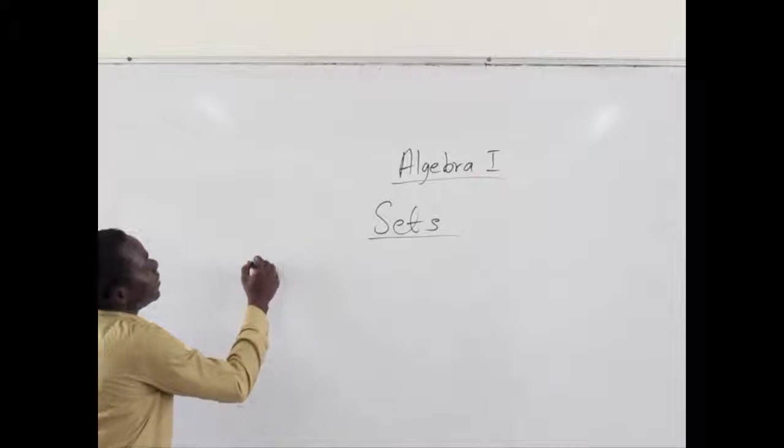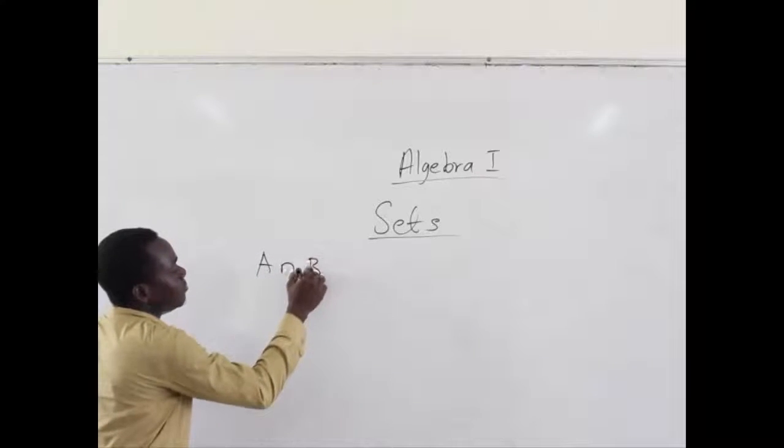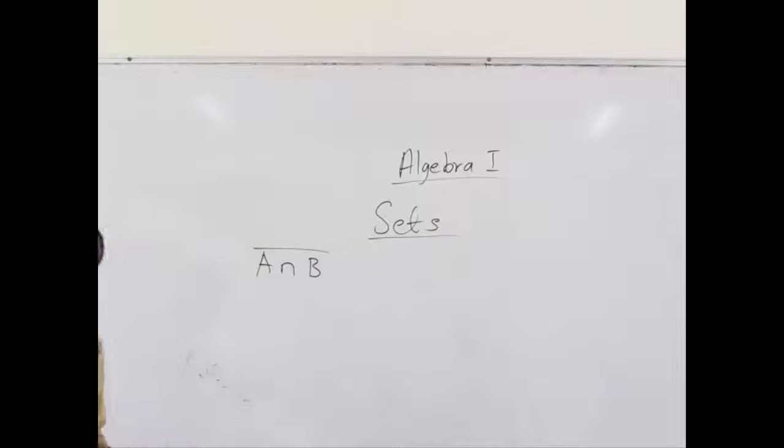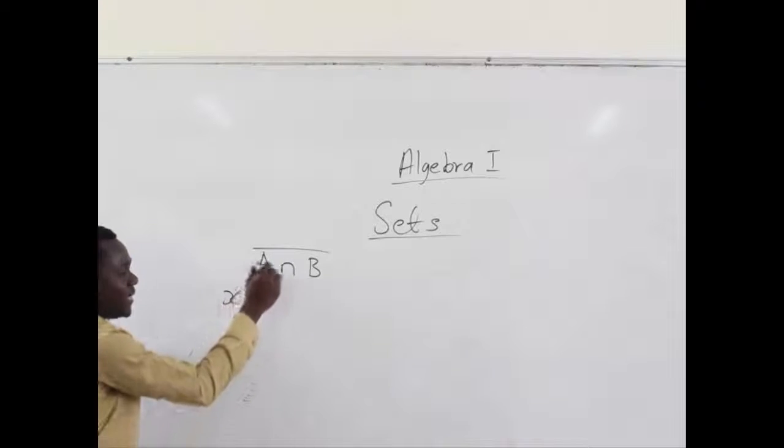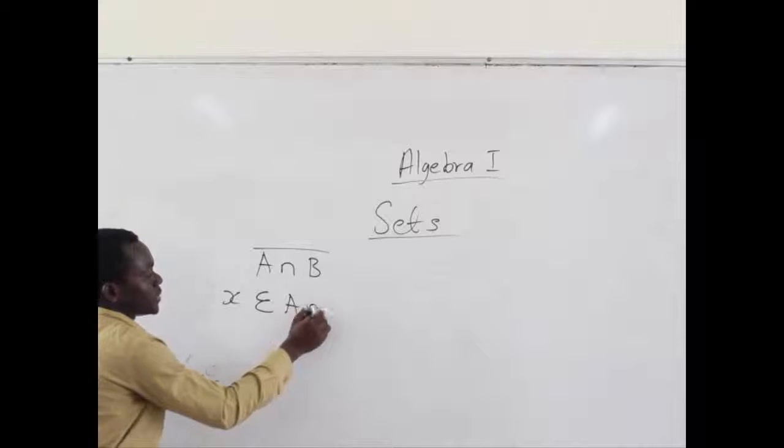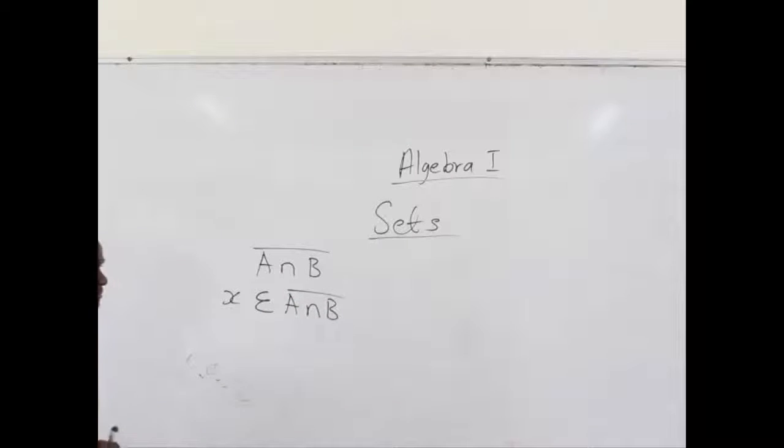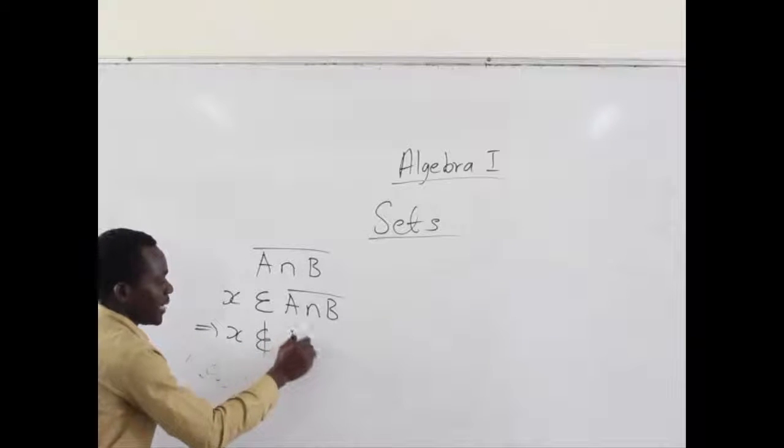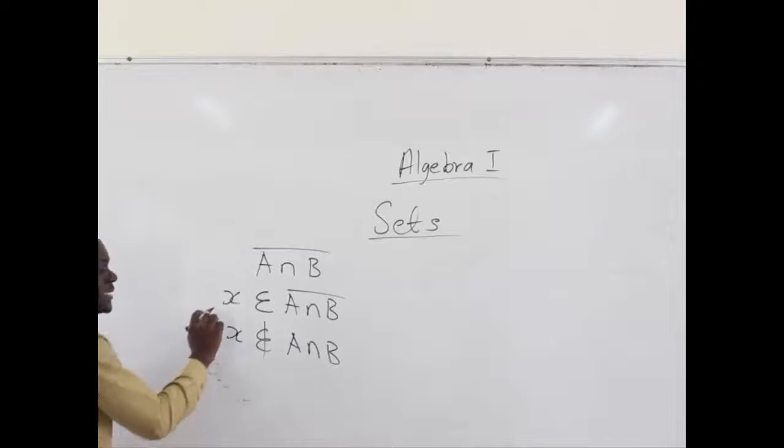Okay, when we say A intersection B complement, what actually comes into mind or what does this operation mean? Now let's assume that X is an element which belongs to A intersection B complement. How do we get to know what it actually means? This means that X does not belong to A intersection B. That is what this statement means. That's to know what the complement means.